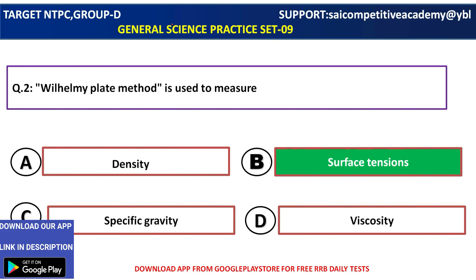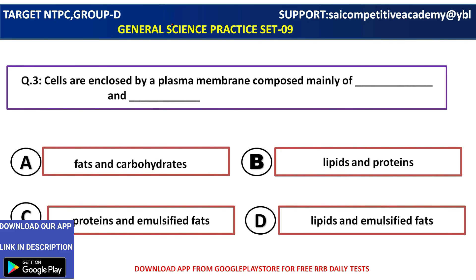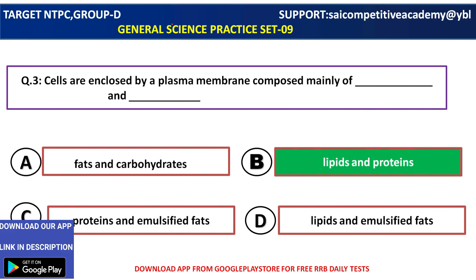You can use this up to 12th class for NCRT in general. The next question: cells are closed by plasma membrane composed mainly of — fats and carbohydrates, lipids and proteins, or lipids and emulsified fats? The main answer is the composition of lipids and proteins.